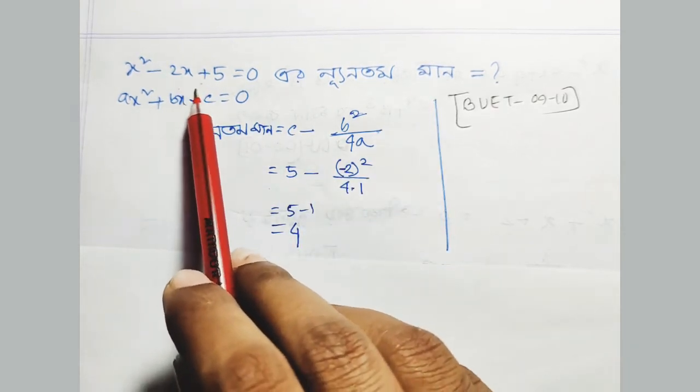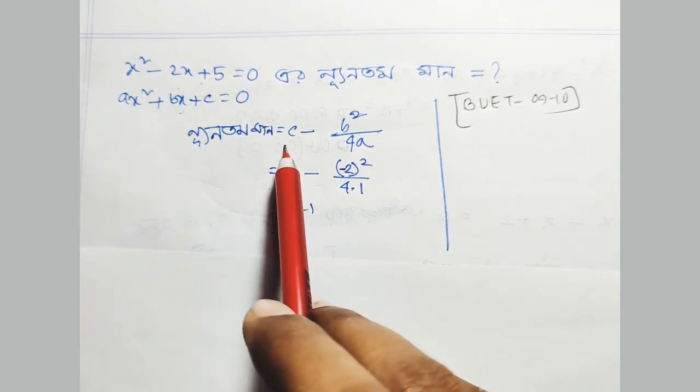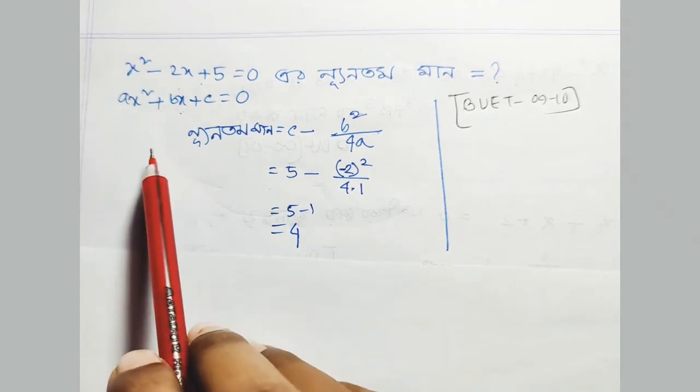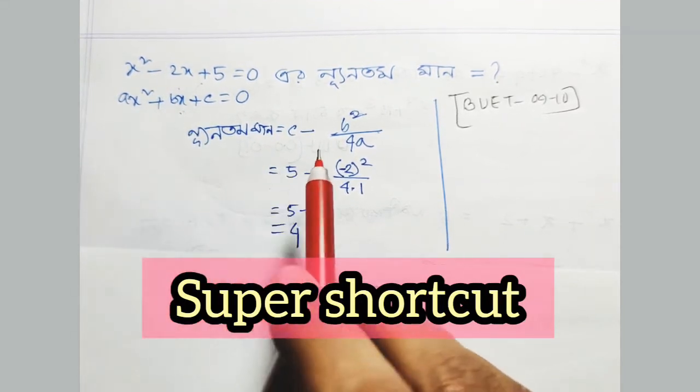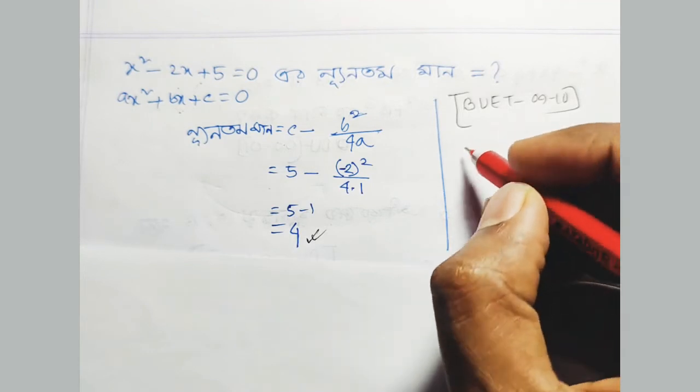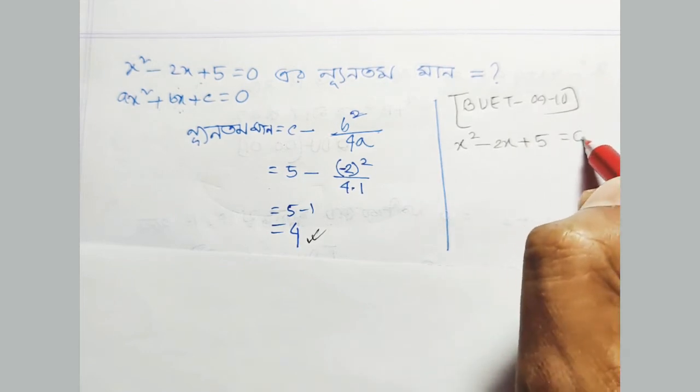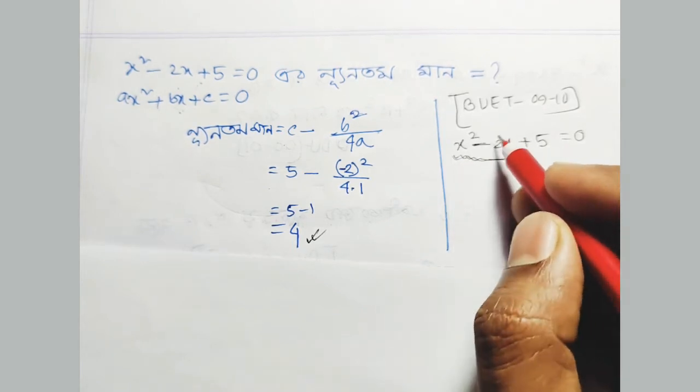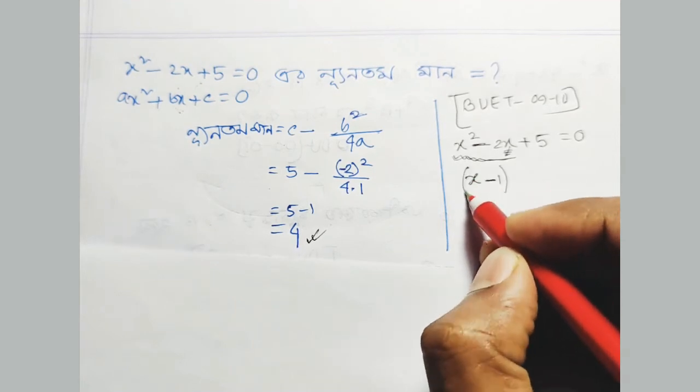For the standard form x² + bx + c = 0, there's a shortcut. The expression becomes -b² divided by 4a plus c. We can also complete the square: x² becomes (x - something)² form by taking half the coefficient and squaring it.